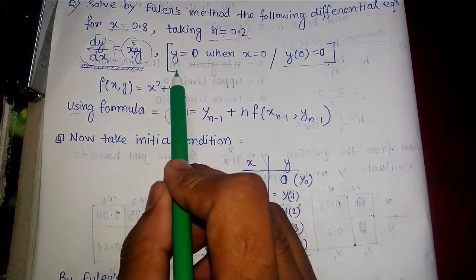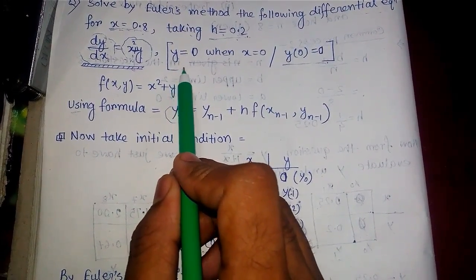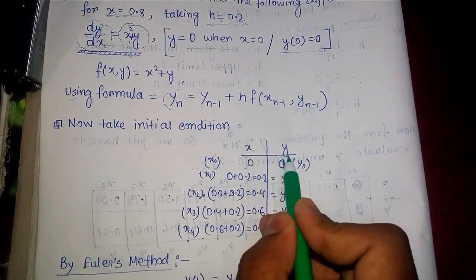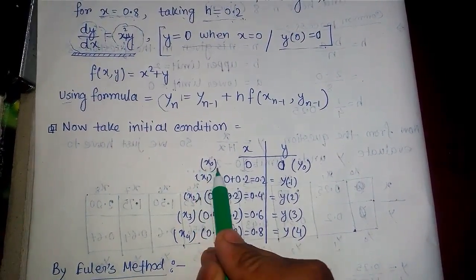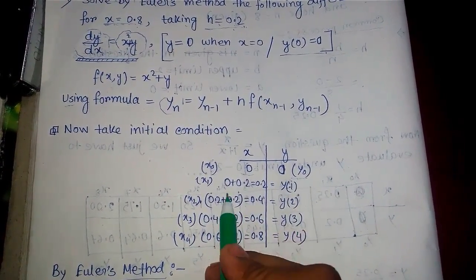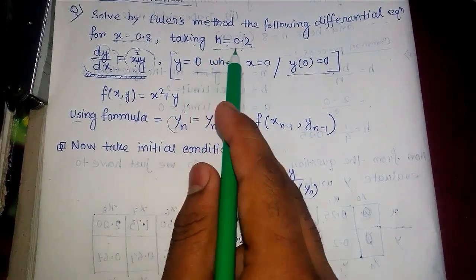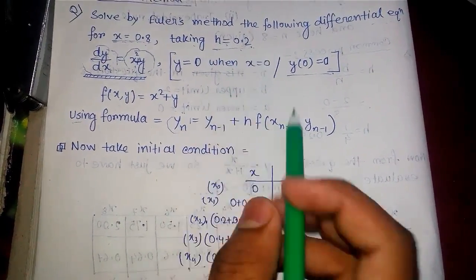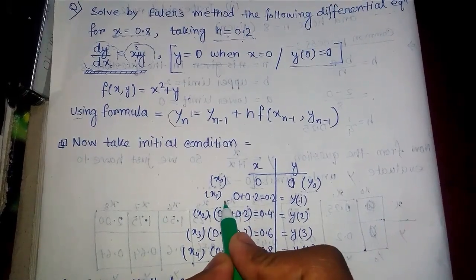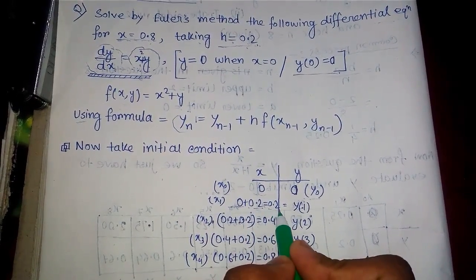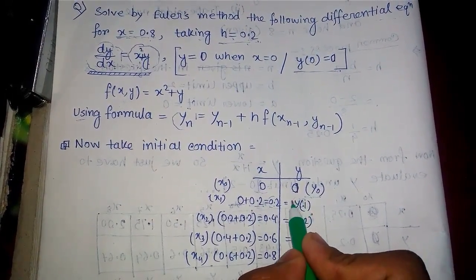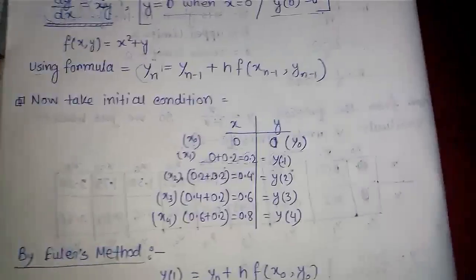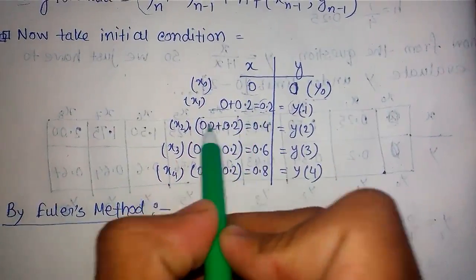The initial condition given is y equals to 0 when x equals to 0. So when x is 0, y is 0 — we name them x₀ equals 0 and y₀ equals 0. Given h equals to 0.2, which is the increment of x. So the first increment: 0 plus 0.2 equals 0.2, and for that value we get y₁.